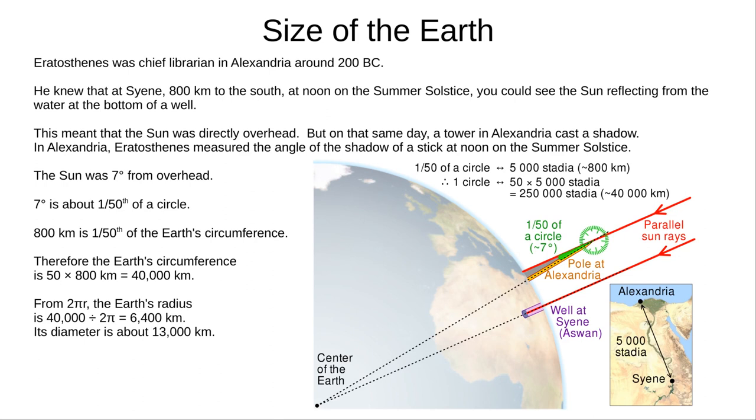Now, the distance from Alexandria to Syene was well known at the time from merchants and surveyors. It was about 5,000 stadia, which in today's figures is about 800 kilometers. So Eratosthenes just multiplied 800 kilometers by 50 to come up with a circumference for the earth of 40,000 kilometers. Now, that is very close to the correct number as we know it today.